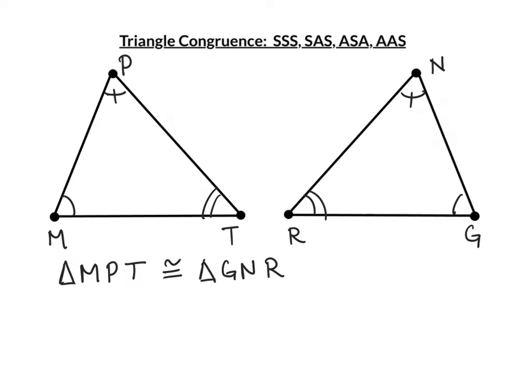Notice how M is marked with a single and T with a double. In the other triangle, the single and the double show that MT is congruent to RG. Looking at the angles between M and P — M with the single, P with the slash, and G with the single, N with the slash — we can see that MP is congruent to GN.